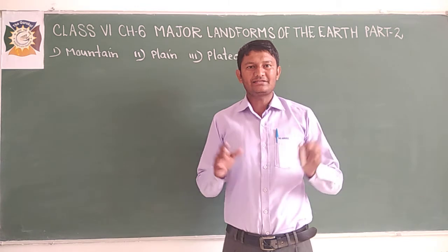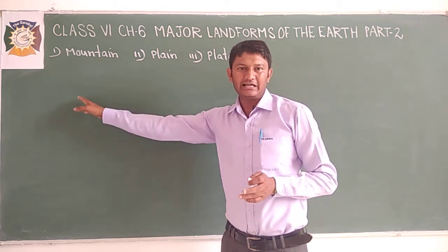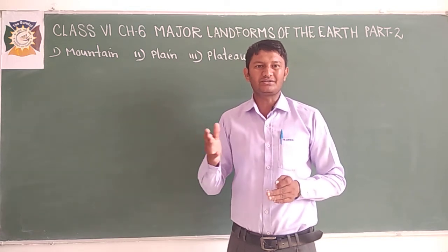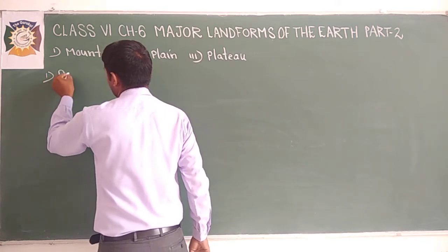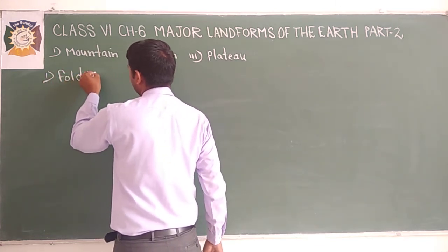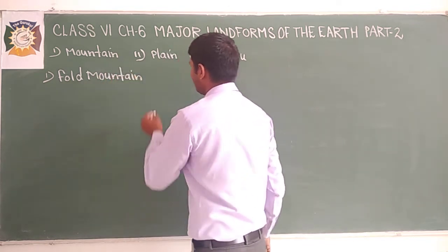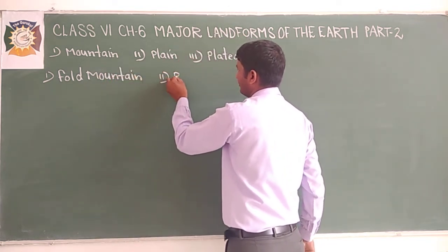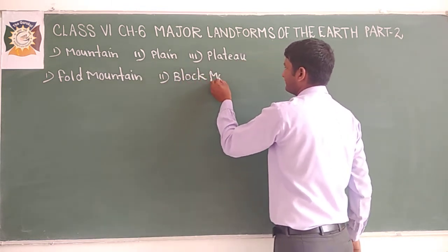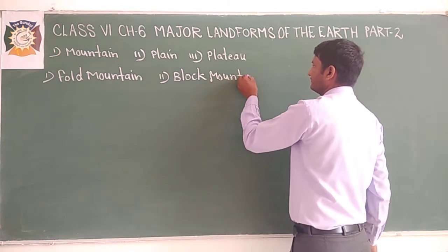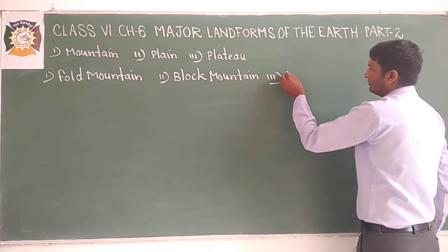As I told you in the very first video, there are three types of mountains. What are these? Let us discuss once more. The first one is fold mountain, the second is block mountain, and the third one is known as volcanic mountain.